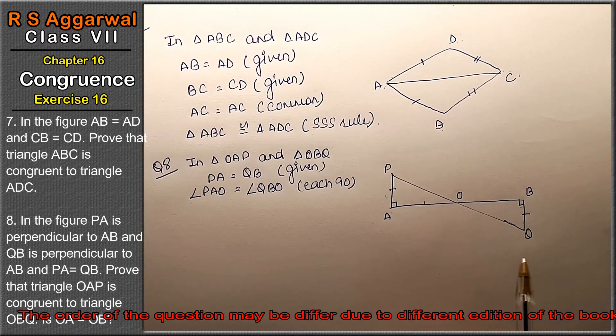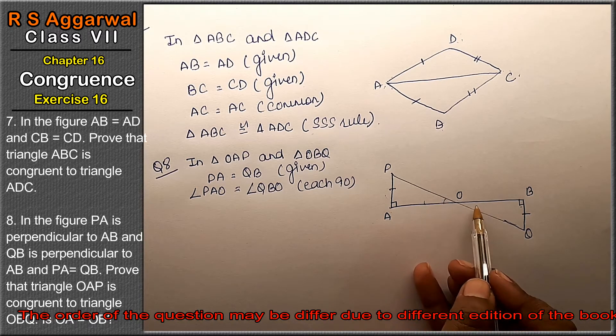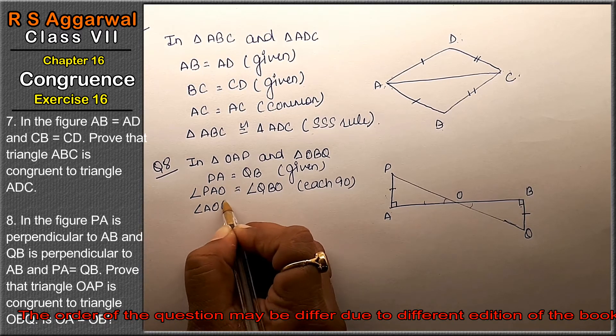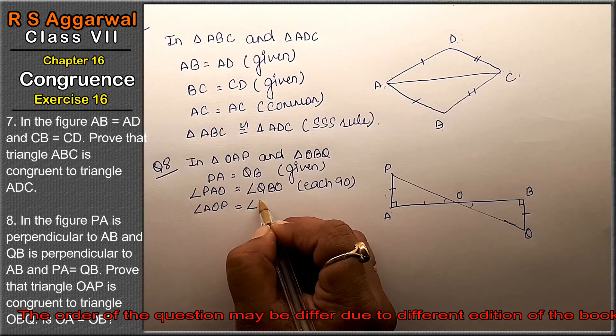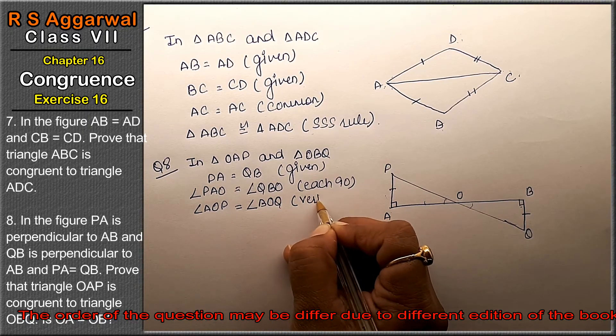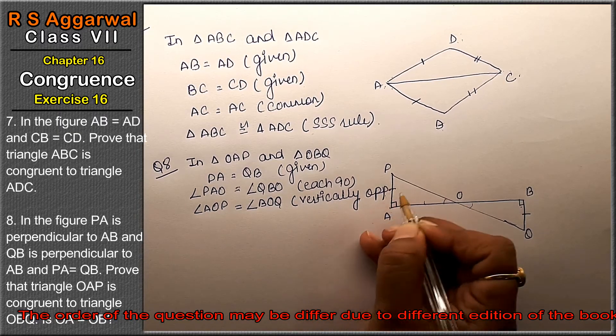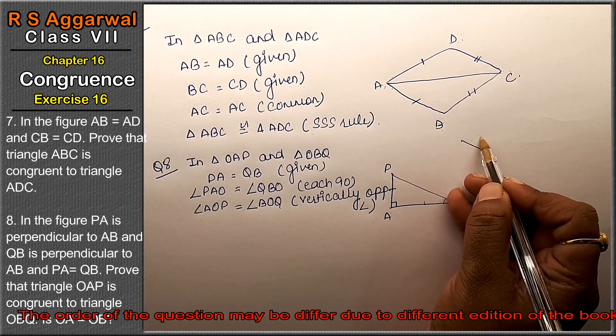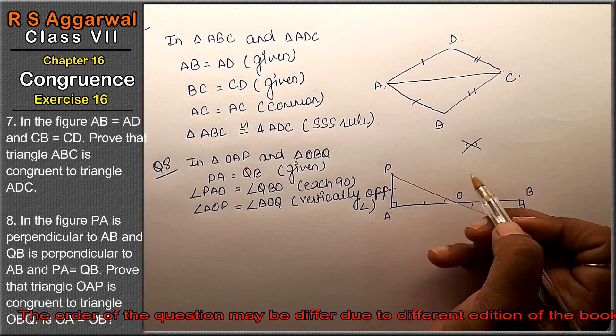See this angle, angle AOP equals angle BOQ. Why? Vertically opposite angles. What do we do, friends? If we cross two lines, then the angles are equal because they are vertically opposite angles.